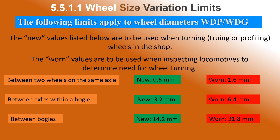For WDP4 and WDG locomotives, the limits are as follows: between the two wheels on the same axle, the new limit is 0.5 mm and the worn out limit is 1.6 mm. Between axles within the bogie, the new limit is 3.2 mm and the worn out limit is 6.4 mm. Between bogies, the new limit is 14.2 mm while the worn out limit stands at 31.8 mm.